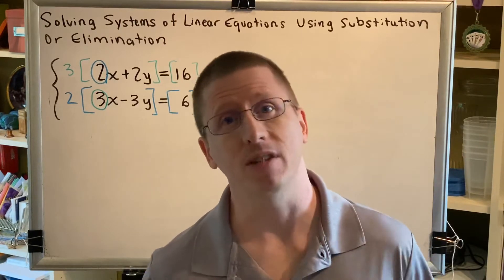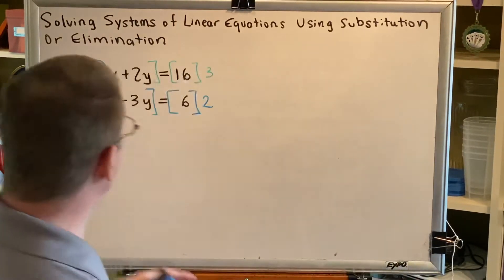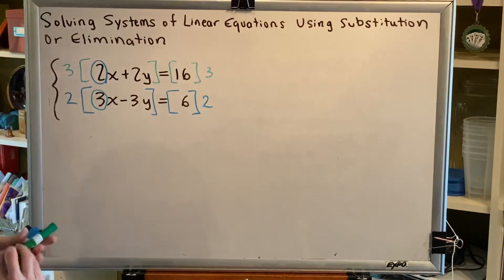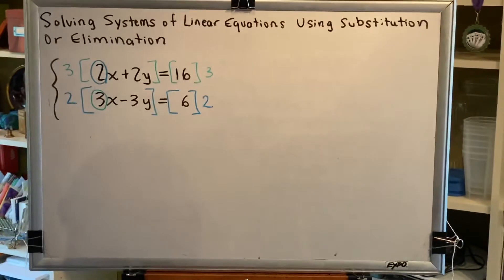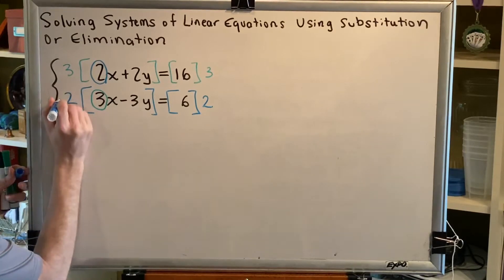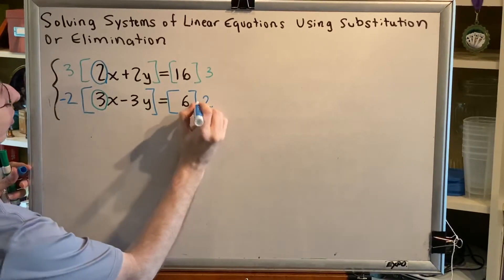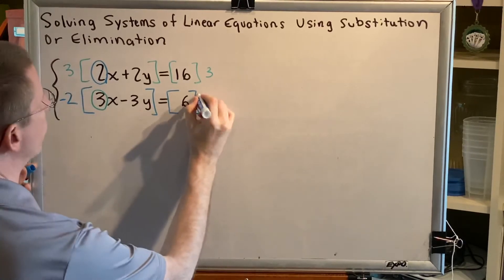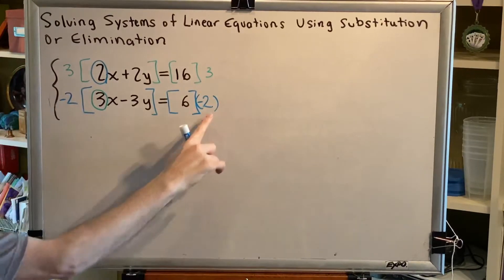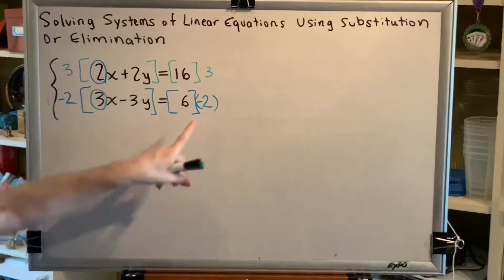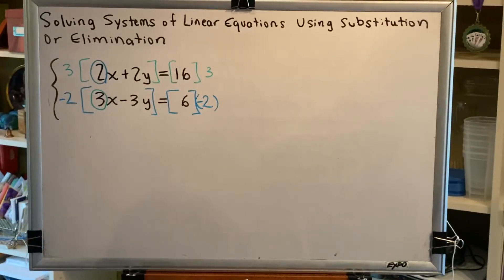Now we need to make them opposites, and the way we do that is by changing the sign of one of these numbers, either the 3 or the 2, and it doesn't matter which one as long as you only do it to one of them. So let's turn this 2 into a negative 2 on both sides, and because of the way mathematics is written, I have to put this 2 in parentheses so that this does not look like subtraction.